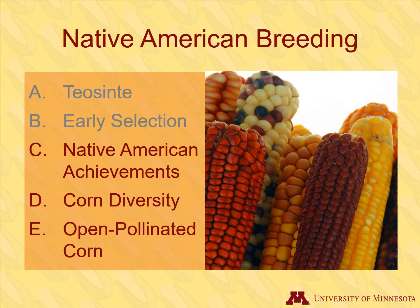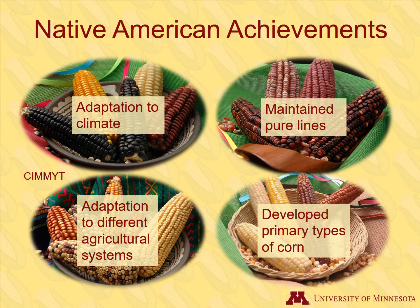Native American agriculture accomplished some amazing things. We know Native Americans domesticated Teosinte and through breeding turned it into a very different plant. They may not have known everything that we do today about corn genetics, but what they did know was very powerful. Specific Native American achievements include development of corn adapted to new climates and new agricultural systems, while maintaining pure lines and developing the primary types of corn.